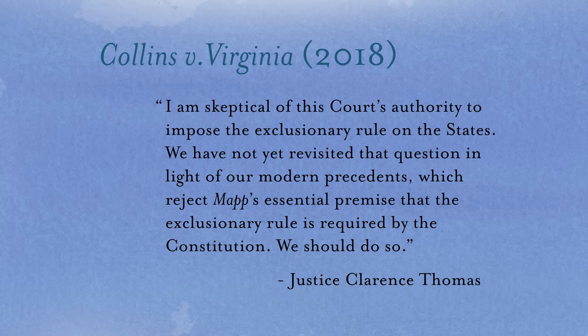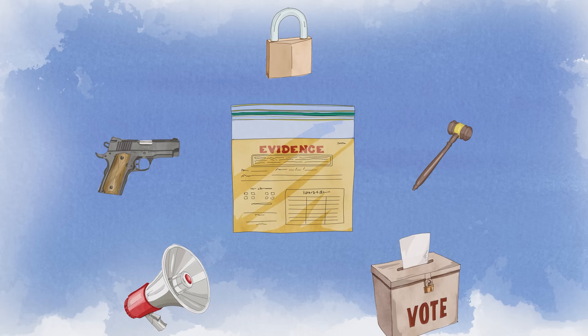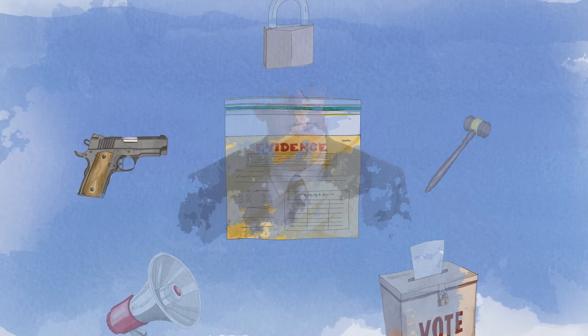The way the Supreme Court has put it is that the exclusionary rule was part and parcel of our constitutional rights, and that without an exclusionary rule, the police would essentially have a license to break into people's homes and illegally seize evidence. The exclusionary rule is a judicially created remedy designed to deter illegal police behavior by taking away any incentive for police officers to illegally search and discover evidence that they might want to use at trial.